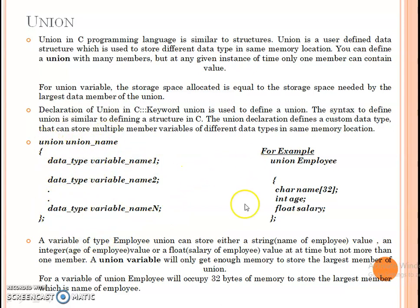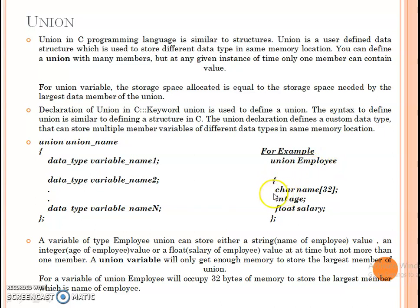We define the union name, then open curly braces. The first variable declaration is a character — character name of size 32 bytes. The second variable is an integer.